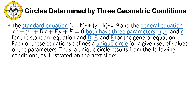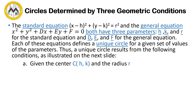Thus, a unique circle results from the following conditions as illustrated on the next slide. We have different conditions. One would be solving the equation of the circle using h, k — the center — and the radius r.